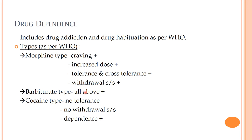In barbiturate-type dependency, all the above features — craving, increasing dose, tolerance, and withdrawal symptoms — are also seen. In cocaine-type dependency, however, there is no tolerance and no withdrawal signs and symptoms; only a mild degree of psychological dependency is seen, which makes it different from other types of dependency.